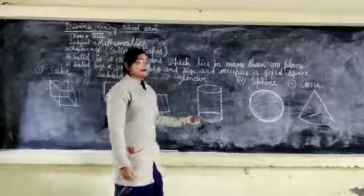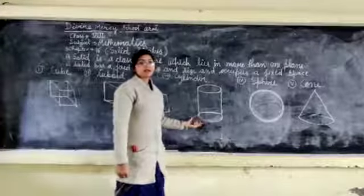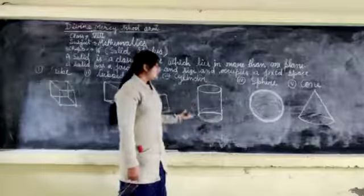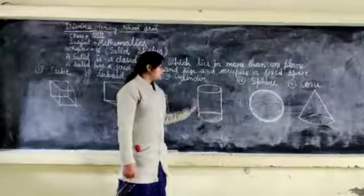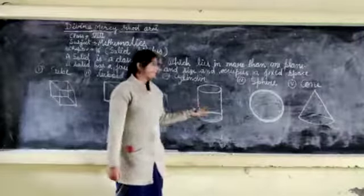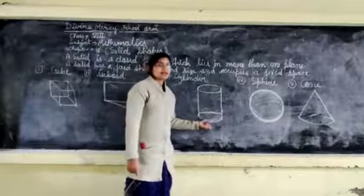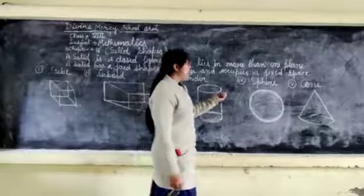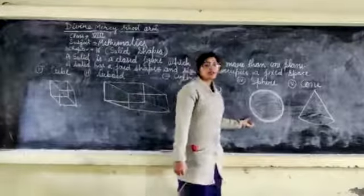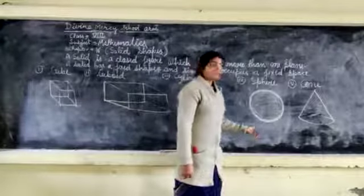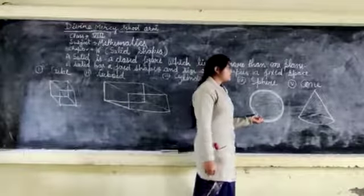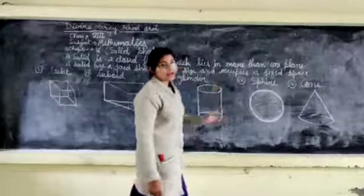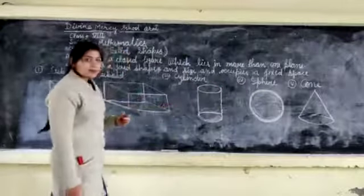The third one is a cylinder — that means like one pipe. One pipe, one cylinder — same thing. This is called a cylinder and it also occupies a fixed space. The fourth one is a sphere — like a ball or a football, it is called a sphere. And the fifth is a cone — like an ice cream cone. This is called a cone.